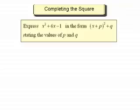Express x squared plus 6x minus 1 in the form (x plus p) all squared plus q, stating the values of p and q.